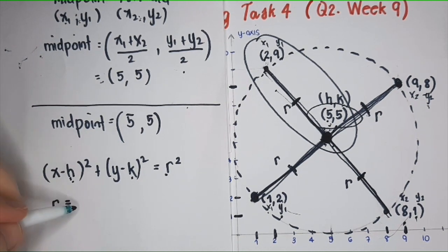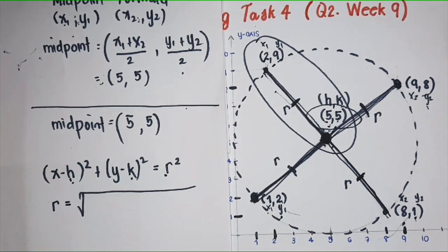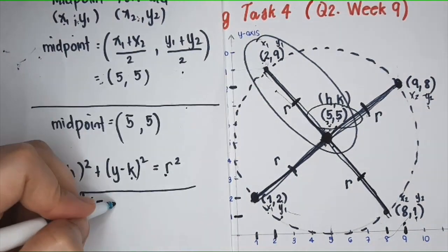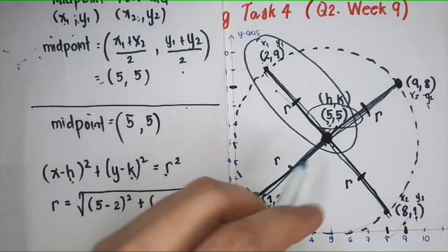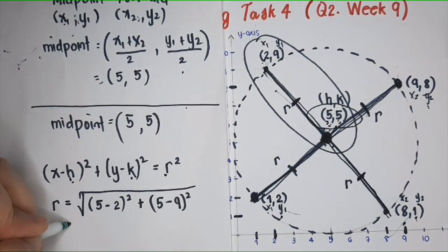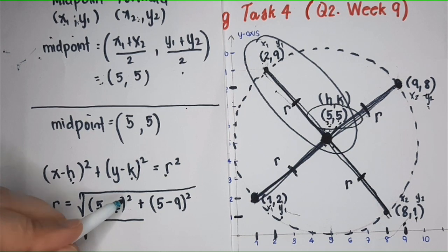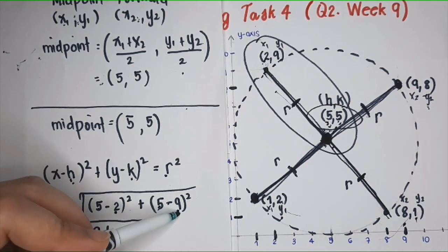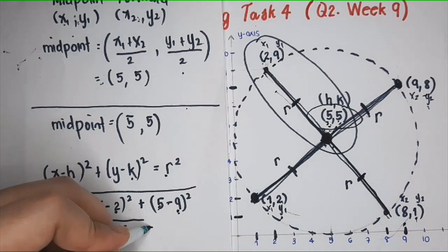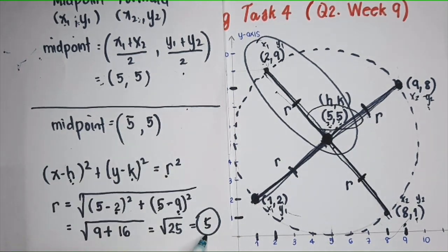Using the distance formula, we get the radius. So this is x1, y1 and this is x2, y2. You have x2 minus x1: 5 minus 2 squared, plus y2 minus y1 squared. What is the answer? You'll have square root of 5 minus 2 is 3, 3 squared is 9, plus 5 minus 9 is negative 4, negative 4 squared is 16. And what is 9 plus 16? 25. What is square root of 25? 5. This is the radius.